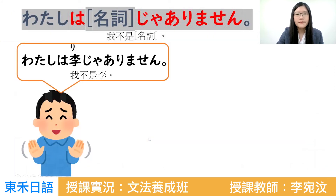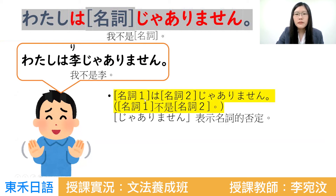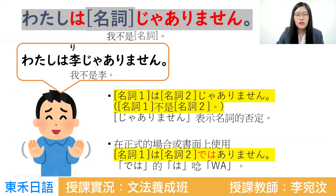接下來要看加上じゃありません，它的意思是「不是」。所以私は李じゃありません，這個じゃ開始念，じゃありません，はい。名詞一不是名詞二的時候，會用じゃありません來表示。在正式或書面上的情況，不用じゃありません，它會變成ではありません。注意這裡也是要念「わ」，ではありません。